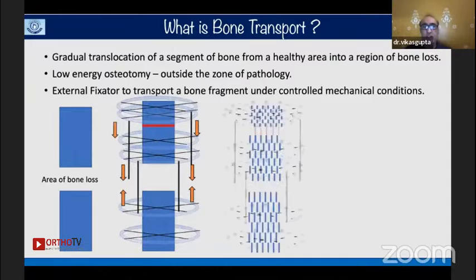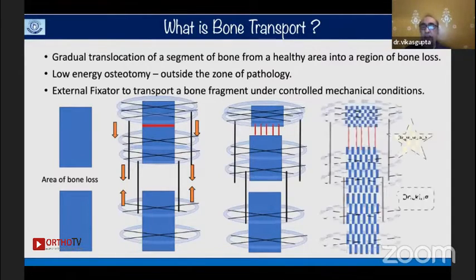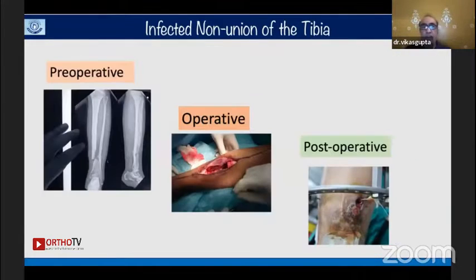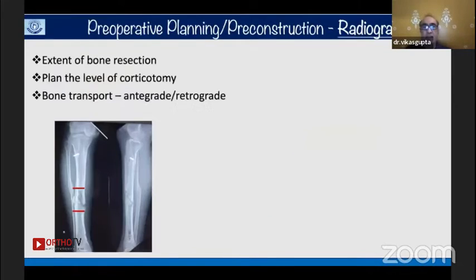As shown in this photograph, a corticotomy creates three segments, and the middle transporting segment is moved until it docks with the parent segment, forming the regenerate. When treating a patient with infected non-union of the tibia, you must follow the steps of pre-operative planning, operative steps, and be aware of post-operative problems or challenges you might face.